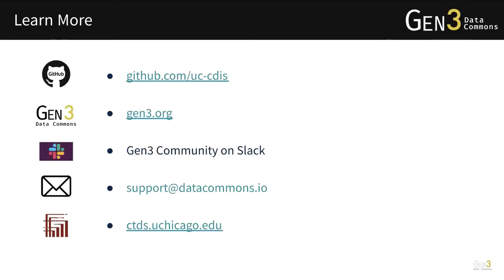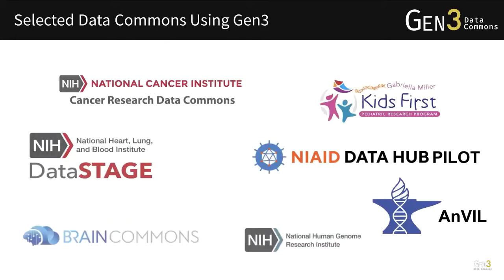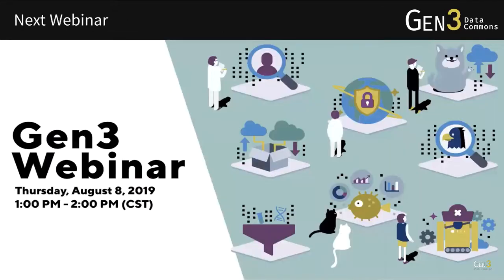There are additional resources to help you start working with Gen3, including the UChicago CTDS GitHub, Gen3.org documentation, the Gen3 community on Slack, data commons support, and the CTDS website. Here are several examples of commons built using Gen3 technology. Our next webinar will be on August 8th at 1pm — please join us to dive into more features in Gen3. Now I'm going to stop here and jump into the Q&A session.